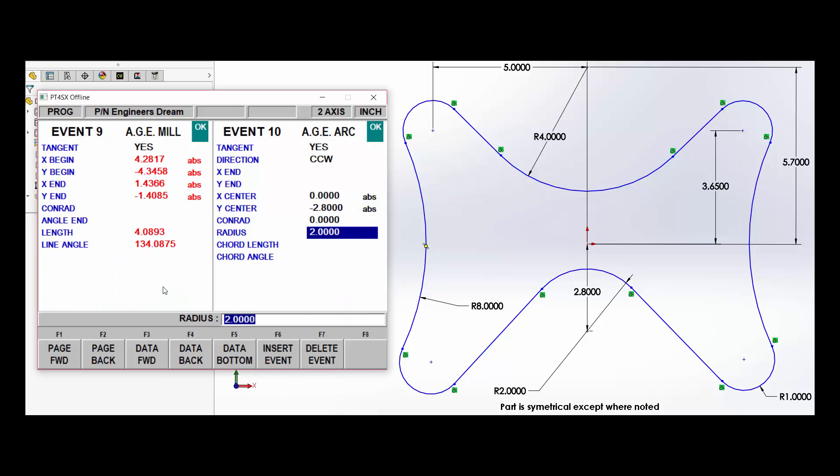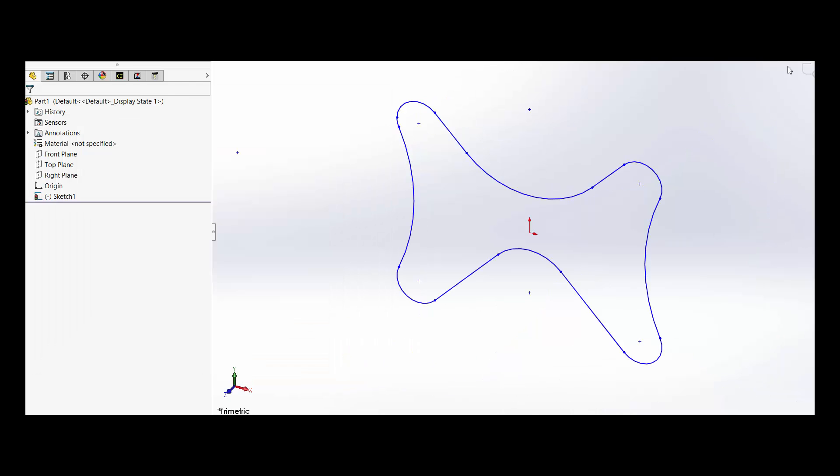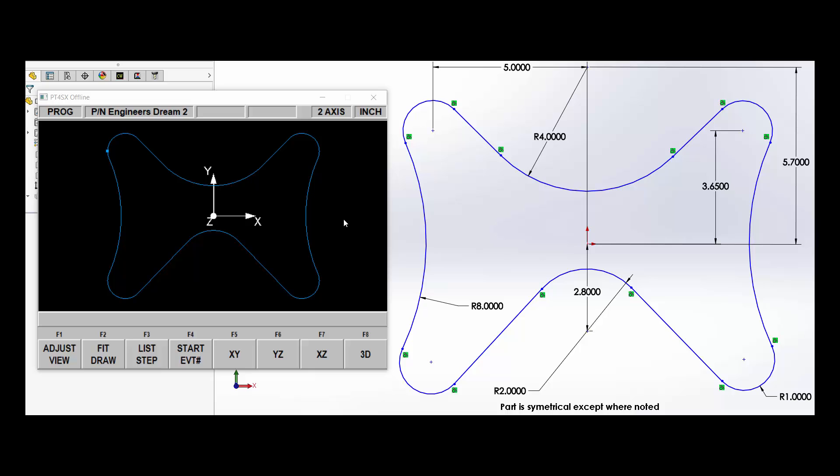Now that we've made the required engineering changes to the part, or we've adjusted the part on the shop floor to make it function properly, or we've created this part from a napkin drawing or a sketch, we need to articulate this to engineering. So we're going to give it to them in the language they understand.